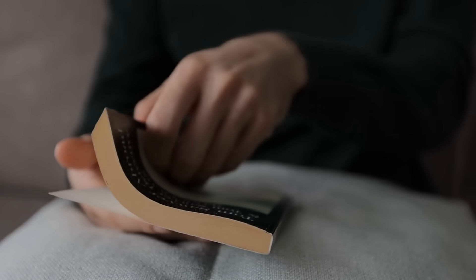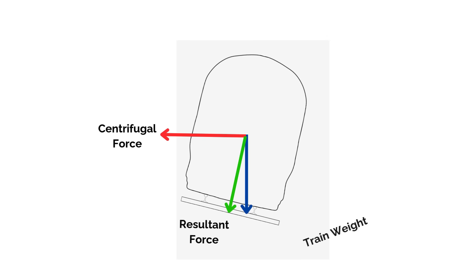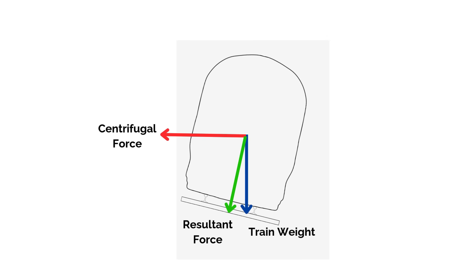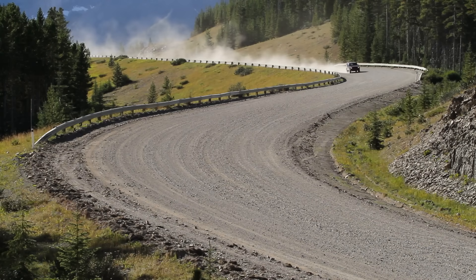Let's define a few key terms. Cant is the height difference between the two rails — it helps balance the lateral forces experienced in a curve. Equilibrium cant is the amount that would perfectly balance gravity and centrifugal force, making the resultant force act directly into the track. If you've ever taken a corner quickly in a car and felt pushed to the outside, that's the same lateral force that cant is designed to counter.